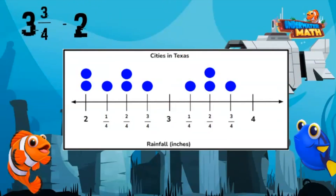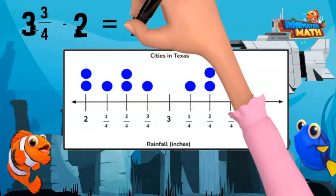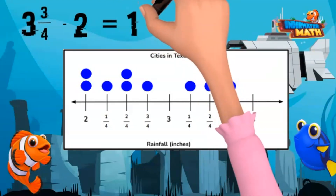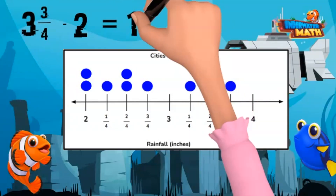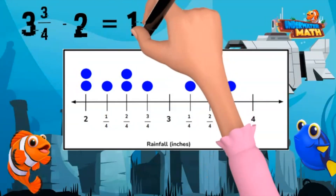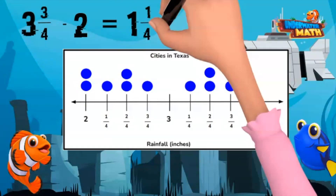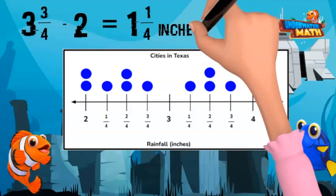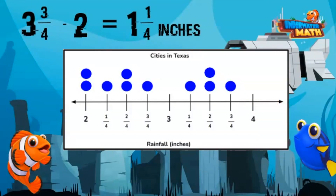To find the difference, we need to subtract 2 inches from 3 and 3/4 inches, which equals 1 and 1/4. The rainiest city received 1 and 1/4 inches more rain compared to the least rainy.